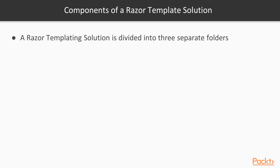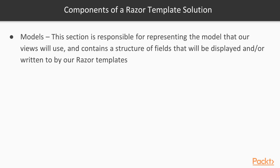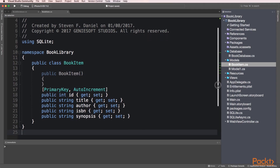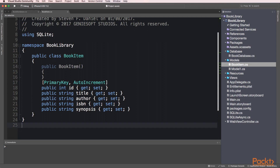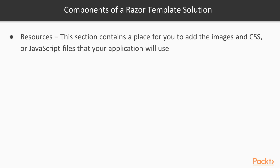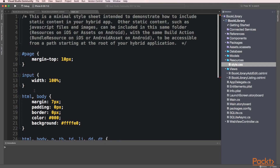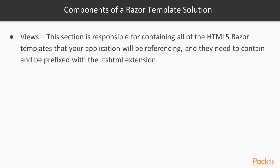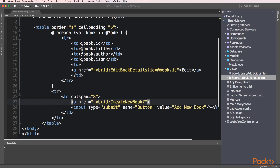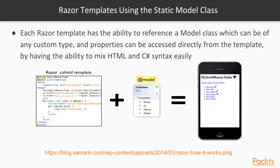A Razor template solution is divided into three separate folders. First, we have Models — this section is responsible for representing the model that each of your views will use, and it contains a structure of fields that will be displayed and or written to by your Razor templates. In the Resources folder, this section contains a place to add all of your images, CSS (Cascading Style Sheets), or JavaScript files. In the Views folder, this section contains all of your HTML5 Razor templates prefixed with a .cshtml extension.